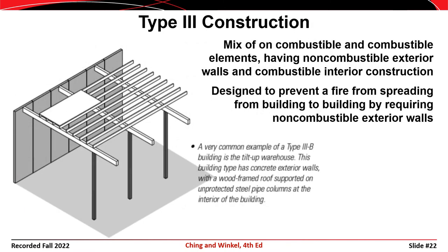Type 3 buildings are constructed from a mix of non-combustible and combustible elements, having non-combustible exterior walls and combustible interior construction. These building types arose in the U.S. at the end of the 19th century to combat the devastating fires that struck congested business districts such as Chicago. The buildings were designed to prevent a fire from spreading from building to building by requiring non-combustible exterior walls. Tilt-up construction with concrete exterior walls and a wood-framed floor supported by steel posts is a modern example of Type 3 construction.